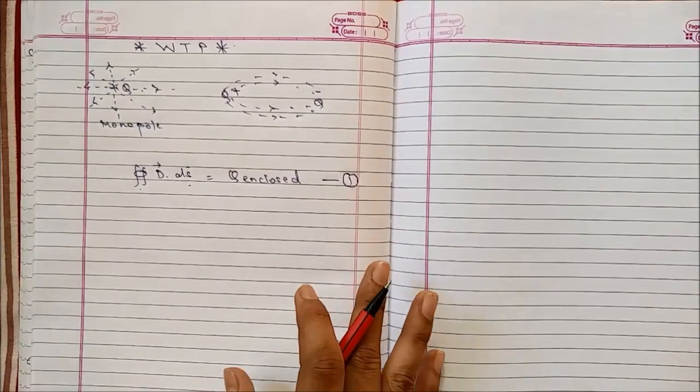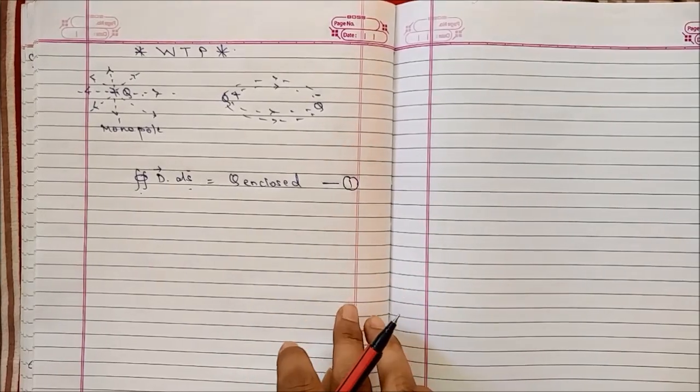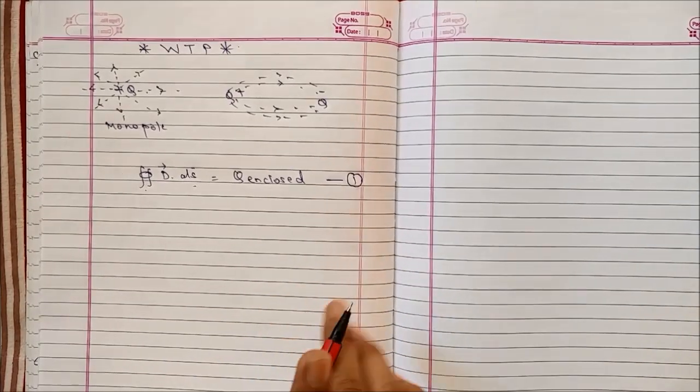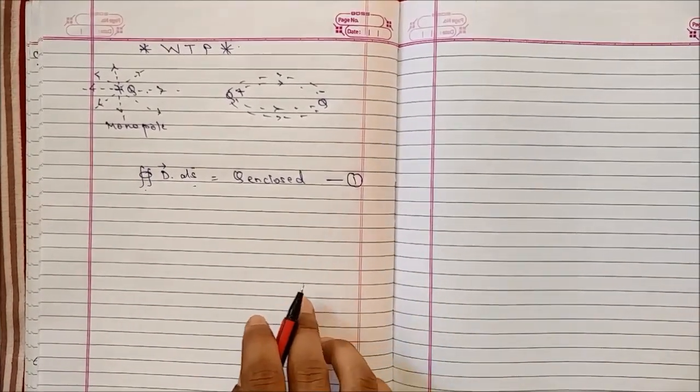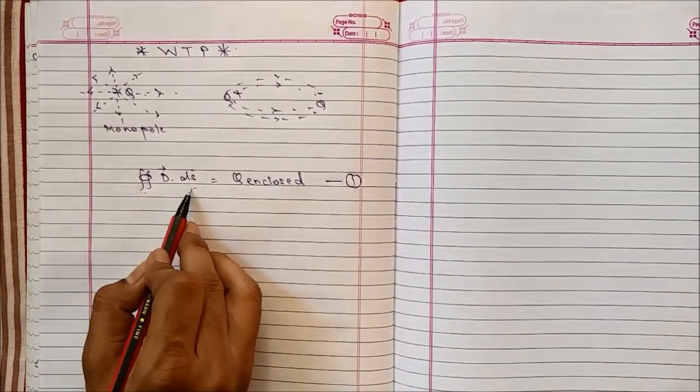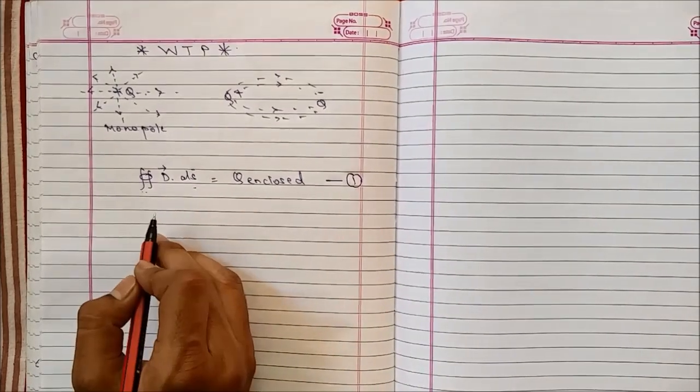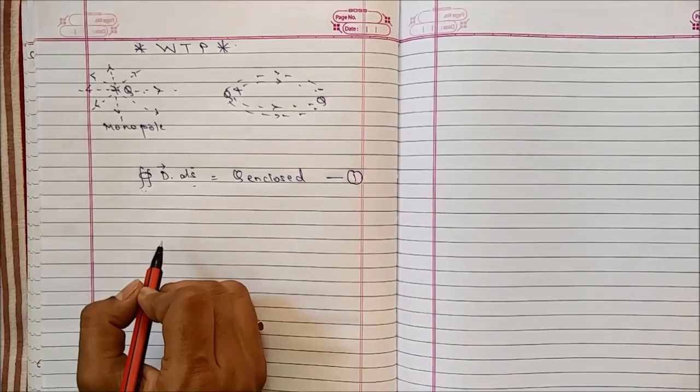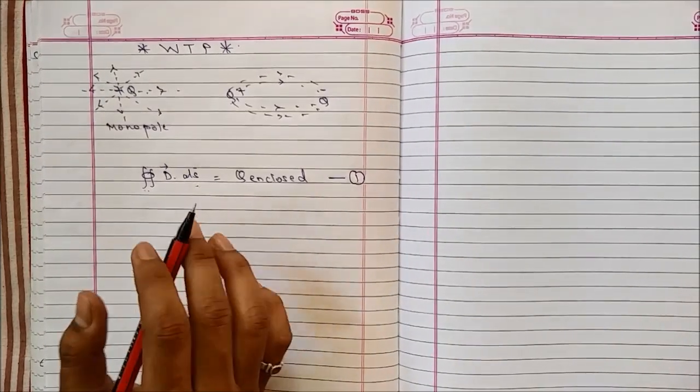Any closed surface of any shape will have multiple surface areas but only a single volume. So this surface integral can be converted into a volume integral using Gauss's divergence theorem.